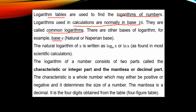Base e is called natural logarithms. The natural logarithm of x is written as log x base e, but in most scientific calculators you have ln x, so ln x represents the natural logarithm of x. The logarithm of any number consists of two parts.